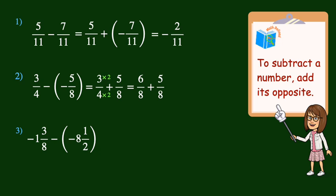Next, we add the numerators, 6 plus 5, and keep the denominator, resulting in positive 11 eighths. The last step is to simplify this improper fraction by dividing 8 into 11. 8 divides into 11 one time, with 3 eighths left over.